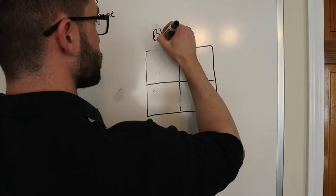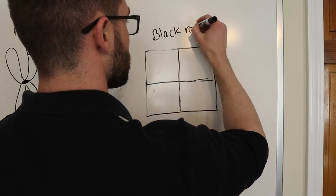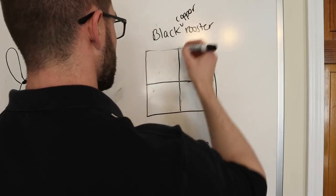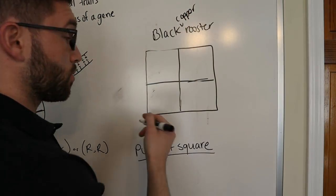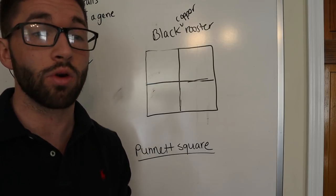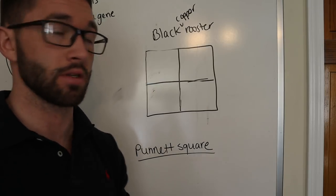You're going to use your Black Copper Maran rooster again. And then we're going to use an Easter egger. And we don't know if she's homo or heterozygous for the blue egg gene. So, we don't know if she carries one copy or two copies of it.